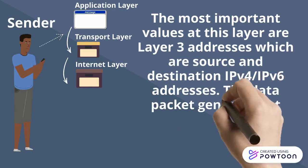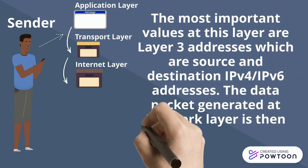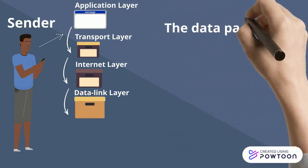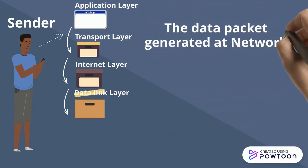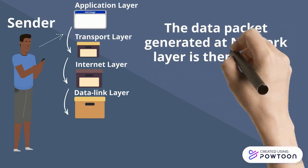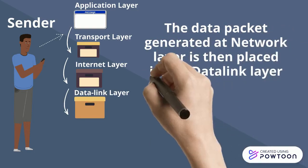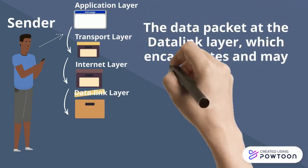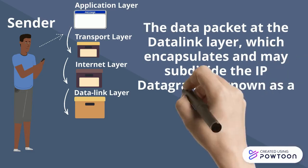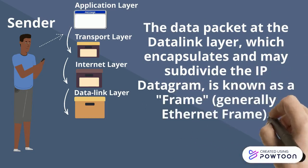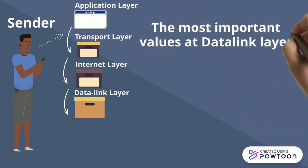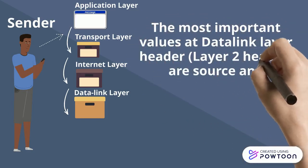The data packets generated at the network layer are then passed down to the data link layer. The packets are placed inside a data link layer header and trailer. The packets at the data link layer, which encapsulate the IP datagram, are known as a frame. The most important values of the data link layer are the source and destination MAC addresses.